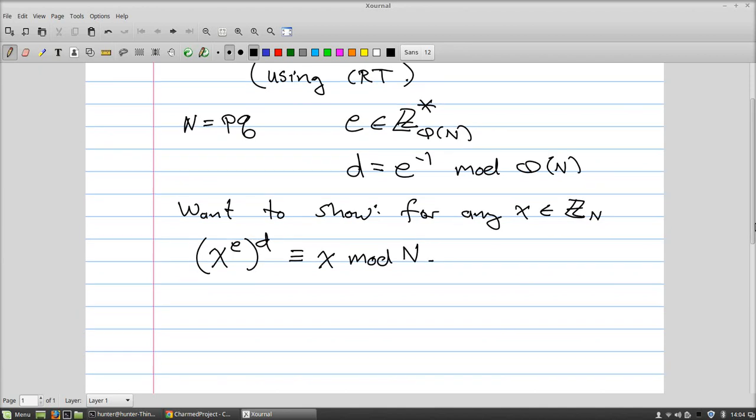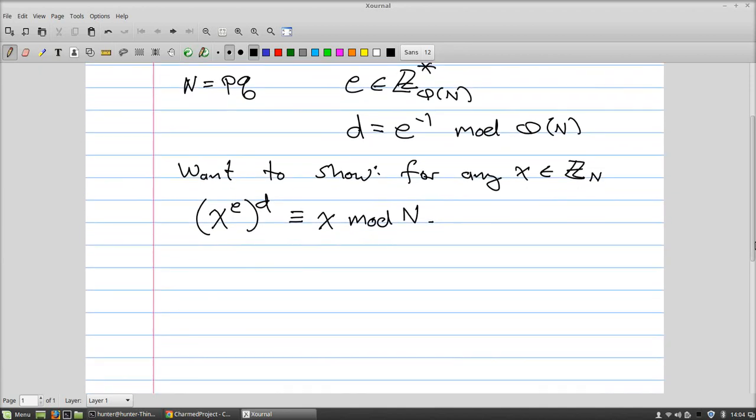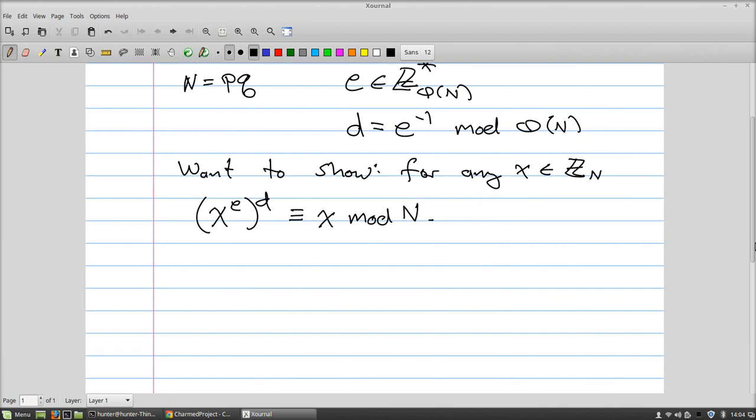I'm amazed that the RSA guys stumbled onto this, but they did. Let's give the proof here. The main fact that we get to use here is that e times d is congruent to 1 mod φ(N).